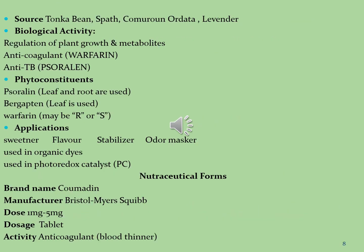Other sources from which coumarin molecules are isolated include tonka bean, sweet clover, coumarin, Ardata and lavender. Coumarin molecules also have biological activities — used for regulation of plant growth and metabolites, as anticoagulant and anti-TB agents. Phytoconstituents include soraline, found in leaves and roots, and bergapten found in leaves. Coumarins are also used as excipients, sweeteners, flavor agents, stabilizers, odor maskers, in organic dyes, and as photoredox catalysts.